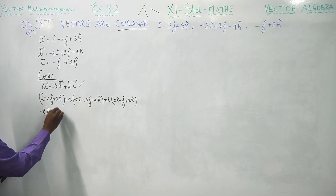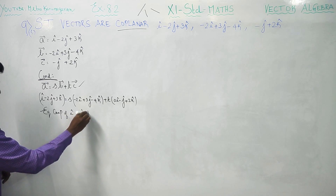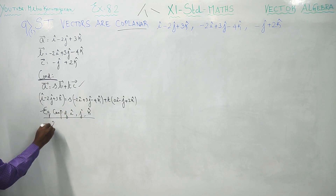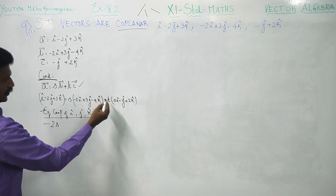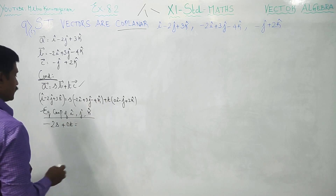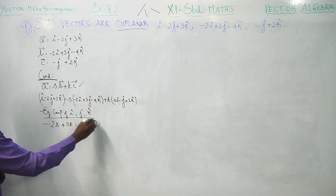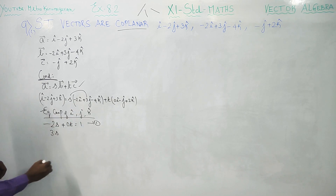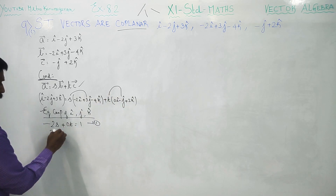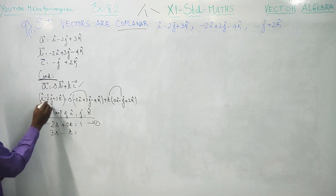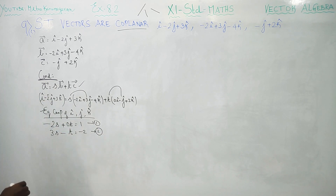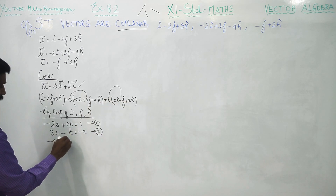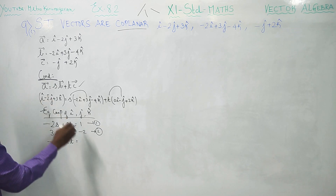Equating the components of i, j, and k: the i component gives minus 2s equals 1, which is equation 1. The j component gives 3s minus t equals minus 2, which is equation 2. The k component gives minus 4s plus 2t equals 3, which is equation 3.